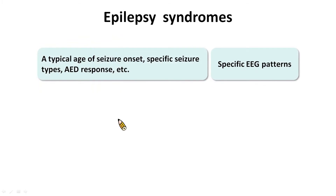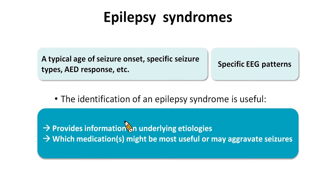Each epilepsy syndrome has a typical age of seizure onset, specific seizure types, anti-epileptic drug response, and EEG characteristics, which when taken together allow the specific epilepsy syndrome diagnosis. The identification of an epilepsy syndrome is useful as it provides information on which underlying etiologies should be considered and which medication might be most useful. Some epilepsy syndromes show seizure aggravation with particular anti-seizure medications, which can be avoided through appropriate early diagnosis of the epilepsy syndrome.